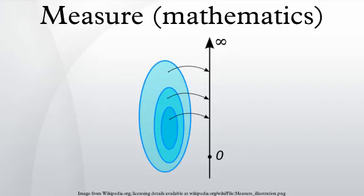In mathematical analysis, a measure on a set is a systematic way to assign a number to each suitable subset of that set, intuitively interpreted as its size. In this sense, a measure is a generalization of the concepts of length, area, and volume.